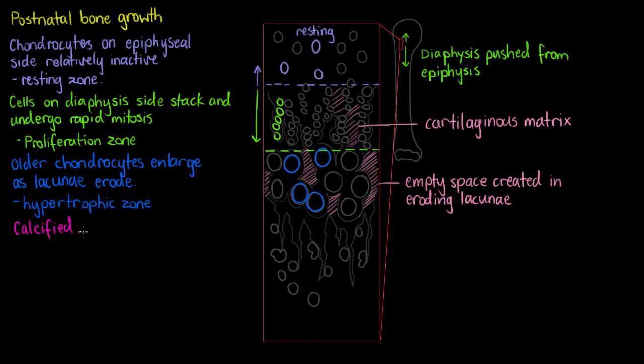Now our next zone specifically is called the calcification zone. In our calcification zone, the matrix has now fully invaded the medullary cavity of the diaphysis, and our old enlarged chondrocytes are now going to start to die off and create even more empty space. And it's going to be sparsely filled with that hardened cartilage that began to form in the previous step.